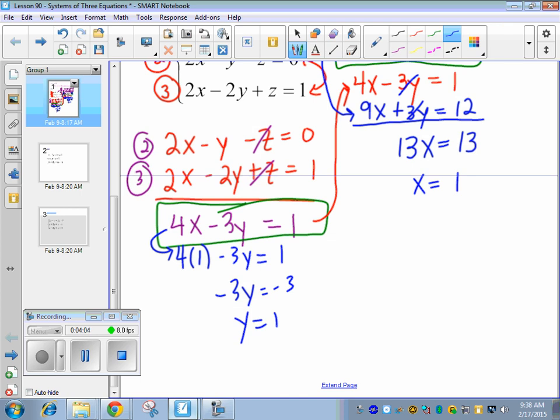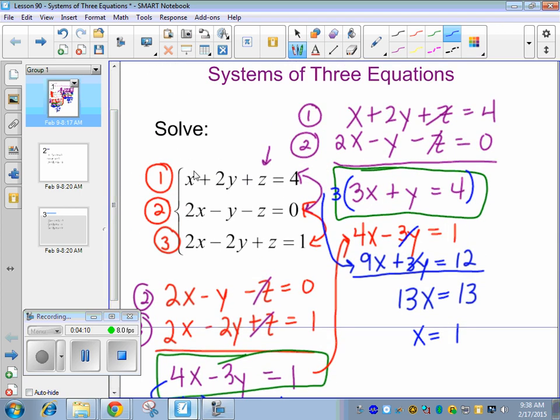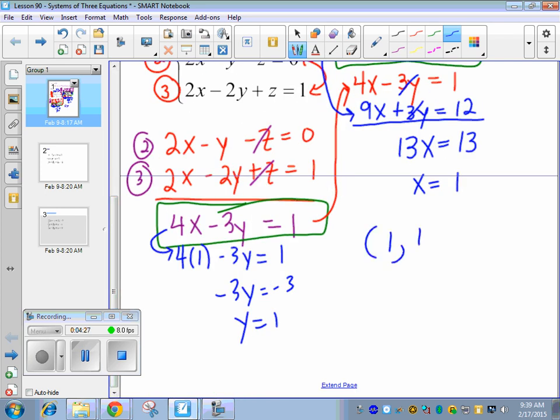Okay, now that we know two variables, you can go back to any of the three original equations. So I'm just going to use this top equation. We know x is 1. We now know y is 1. So that's 2 plus 1 is 3. Subtract. So what do we get for z? We get 1. And then you have to write it as a coordinate. x, y, z. This one happens to call it 1, 1, 1.